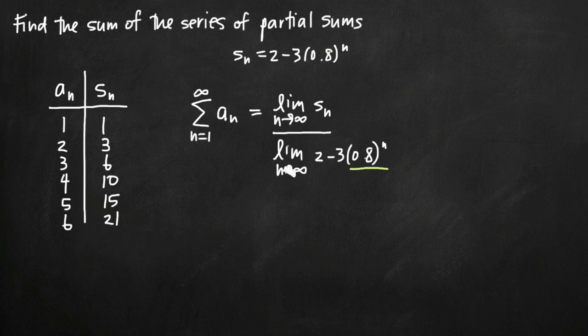So what we can say is that as n goes to infinity, this 0.8 to the n becomes 0 and it's just going to go away. So what we're left with here is 2 minus 3 times 0. Of course, that takes away the 3 as well. We get 3 times 0 here, that goes away, and we're just left with a value of 2.